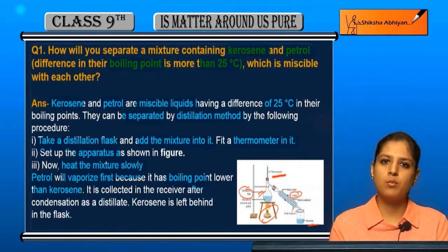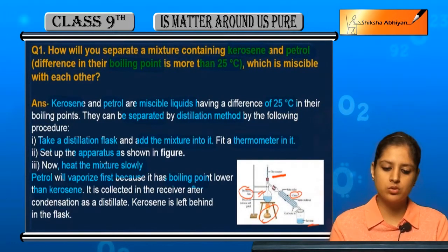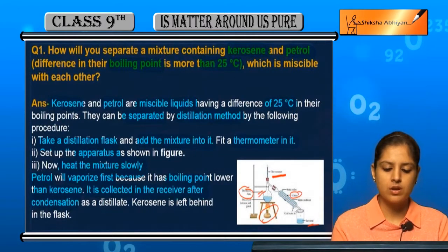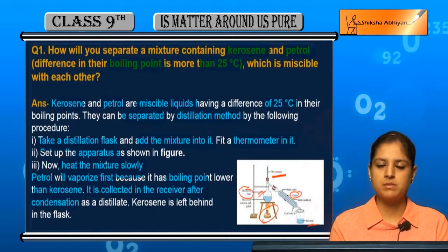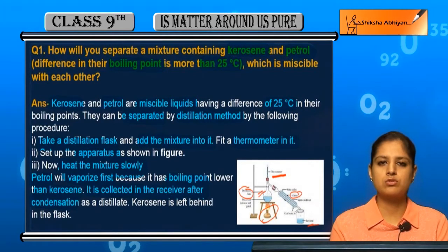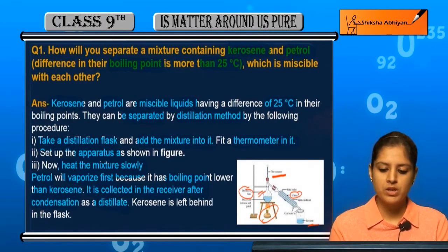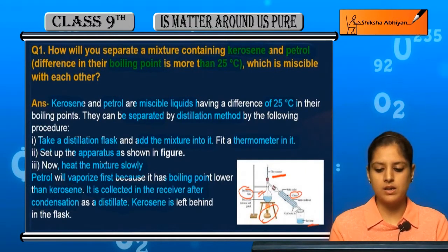Because petrol has a lower boiling point, it will be vaporized first. It is then condensed and collected in the receiver. Using the distillation method, we collect the vaporized petrol in the receiver after condensation.